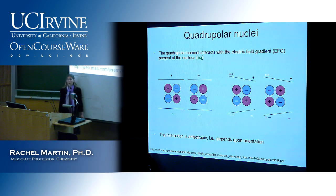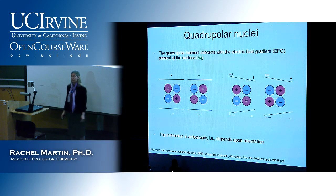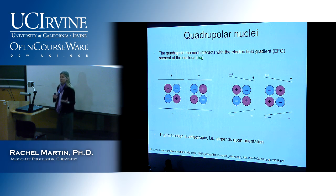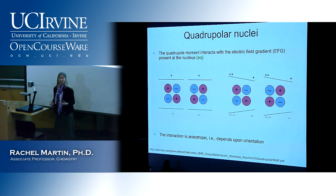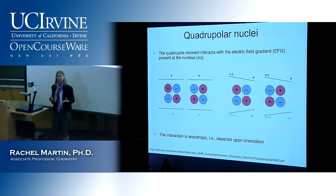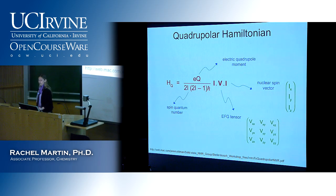The quadrupolar interaction is more complicated: the second-order quadrupole term behaves as a fourth-rank tensor, so spinning at the magic angle doesn't fully remove it. You'd need two degrees of freedom to average it out completely. One approach is spinning at two different angles during the experiment (double rotation); another uses one averaging in real space and another in spin space. These techniques are more advanced but are active research areas.